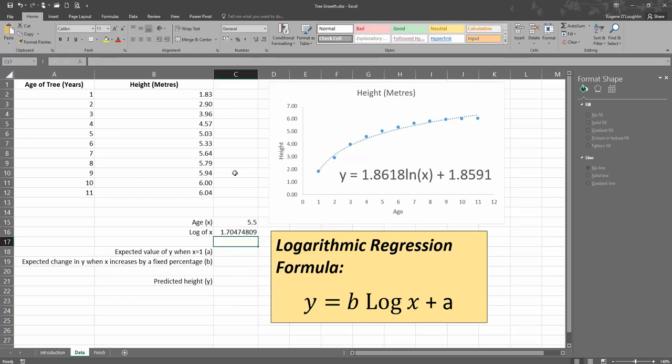So we've got one of the three values that we need in our formula. We need a value for x, the log of x, natural log of x. We also need b and we also need a, and Excel has given us those values. So let's put them in here. So my value for a is, I'm copying this from the diagram, 1.8591. My value for b is 1.8618.